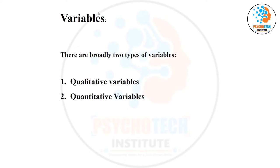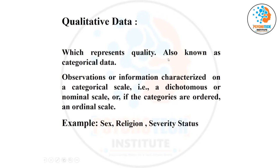Quantitative means that value itself has a quantity — a magnitude to represent something. Like your weight: this much weight. And if you look at the qualitative and quantitative variable examples: sex, religion, and severity of disease.